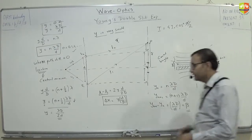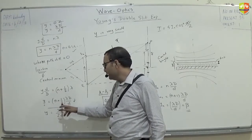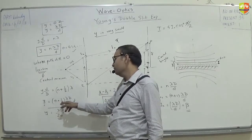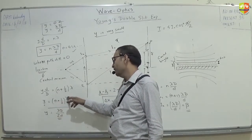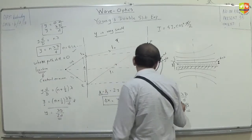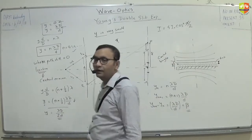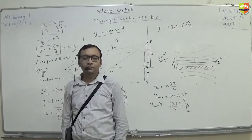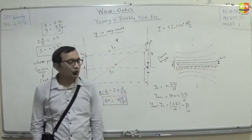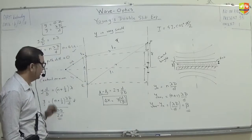The nth dark fringe position is (n + 1/2)λD/d, and the (n+1)th dark fringe is (n+1+1/2)λD/d. When you subtract, you get the same fringe width λD/d. So we have defined fringe width and found the locations where bright and dark fringes will be.